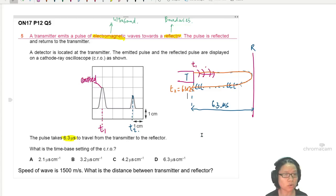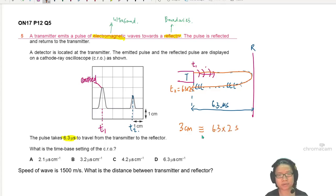What is the time base setting of the CRO? We know we can adjust the time base setting. This is 3 cm and 3 cm is equivalent to 6.3 times 2 seconds. We can find 1 cm equivalent: 6.3 times 2 divided by 3, which is 4.2 microseconds. So it's 4.2 microseconds for every cm. We know that the further away the reflector is, the time interval, this 6.3 times 2, is your time interval for the ultrasound to go and come back.